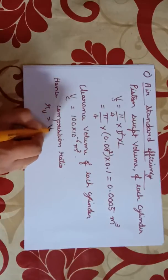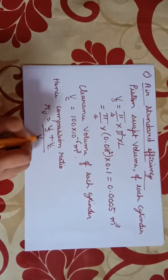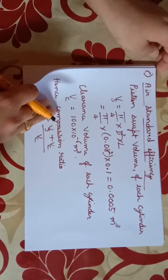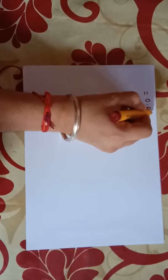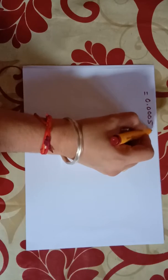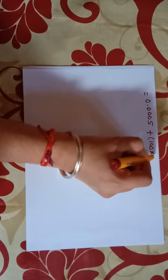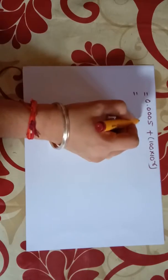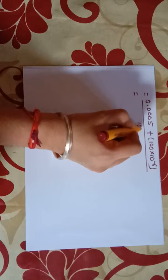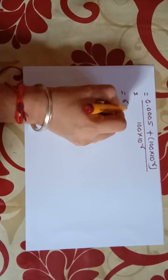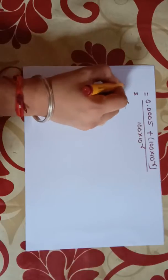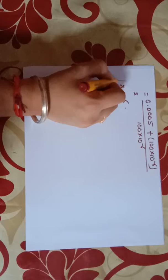r is equal to Vs plus Vc by Vc, that is equal to 0.0005 plus 100 into 10 raised to minus 6 divided by 100 into 10 raised to minus 6, that will be equal to 6. Therefore r is equal to 6.